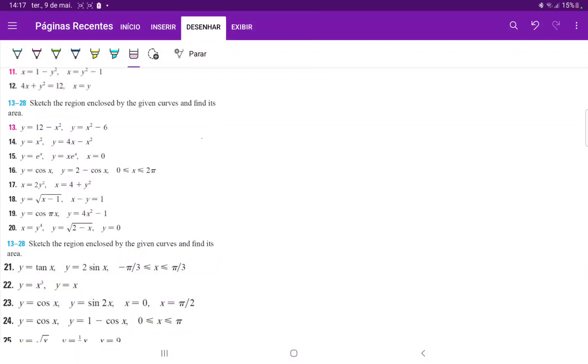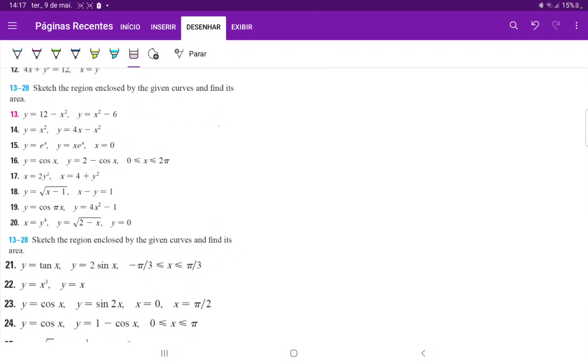For number 19, we have to draw these curves and find the area between them. Let's begin with cosine of pi x. When we have a trig function in the form y equals cosine of bx, our period, the time it takes to complete a full oscillation, is 2π over b.